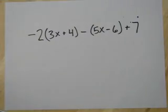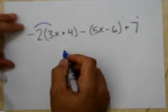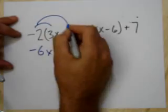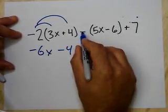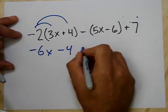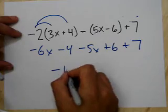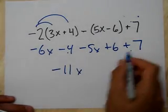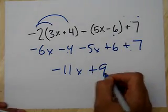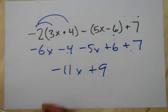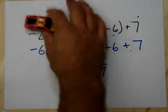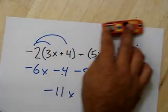Don't forget: multiplication is repeated addition. Three times negative 2 means negative 2 plus negative 2 plus negative 2, giving negative 6. Let's distribute: negative 2 times 3x gives negative 6x; negative 2 times positive 4 gives negative 4. Then combining with the remaining terms gives minus 5x, plus 6, plus 7. Combining like terms: negative 11x, and then combining constants gives you the final answer. Also remember: reversing a forward direction gives negative, and reversing a backward direction gives positive — to reverse the reverse is to go forward.